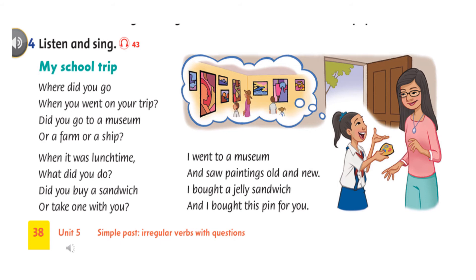Where did you go when you went on your trip? Did you go to a museum or a farm or a ship? When it was lunchtime, what did you do? Did you buy a sandwich or take one with you? I went to a museum and saw paintings old and new. I bought a jelly sandwich and I bought this pin for you.